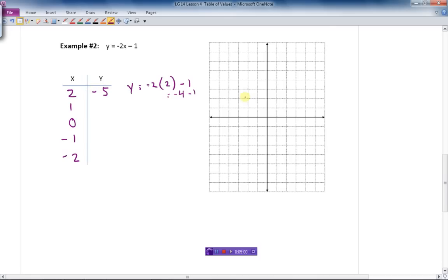Well, I can plot that right away if I want. 2, over 2, 1, 2, 3, 4, 5 down. There is our first point right there. Let's do the next one. Plug 1 in there. 1 times negative 2 is negative 2 minus 1 more is negative 3.